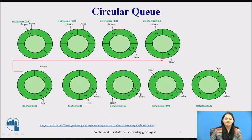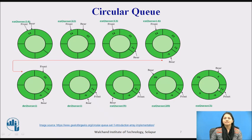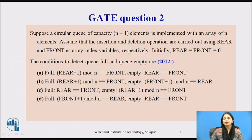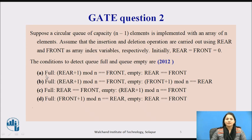When all values are inserted, rear is nearly at the end and front is at index 2. To insert one more value we use the wrap-around: rear comes to the 0th position, then moves to the 1st position — that is the full condition. At full condition, incrementing rear by 1 brings it equal to front, i.e., (rear + 1) mod n equals front. So the full condition is (rear + 1) mod n equals front, and empty condition is rear equals front. Therefore option A is the correct answer.